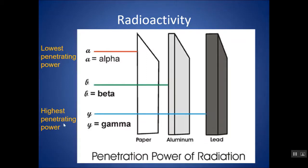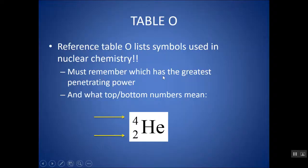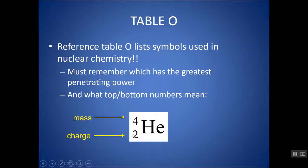Gamma has the highest penetrating power and alpha the lowest. Table O lists all the symbols used in nuclear chemistry. Remember: the top number is mass and the bottom number is charge. The mass of an alpha particle is 4, and its charge is plus 2. A positive charge is not always indicated, but a negative always would be.